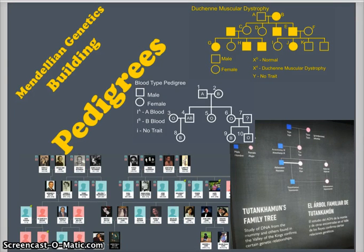Hello and welcome back. Today we're going to look at Mendelian genetics by learning how to build pedigrees. Pedigrees show the relationships between generations of a family and how traits may be passed from one generation to the other.